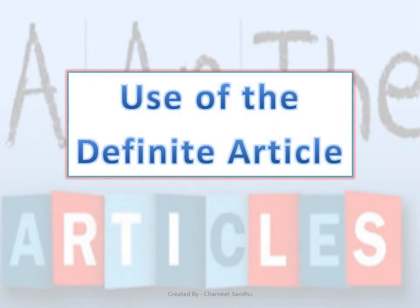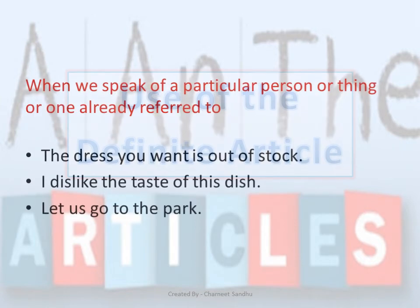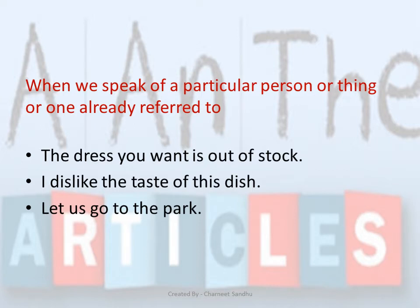Let's look at the use of definite articles in detail. We use the definite article 'THE' when we speak of a particular person or thing, or one already referred to. For example: 'The dress you want is out of stock.' Here, the speaker as well as the listener knows which dress is being referred to, so we use the definite article 'THE'.